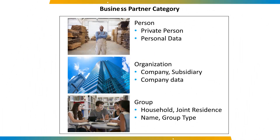When a business partner is created, the business partner category must be selected. The business partner category is the term used to classify a business partner as one of the following: a natural person — for example, a private individual or an employee; an organization, a legal entity or part of a legal entity, such as a company or a department of a company. The business partner category determines which fields are available for data entry.